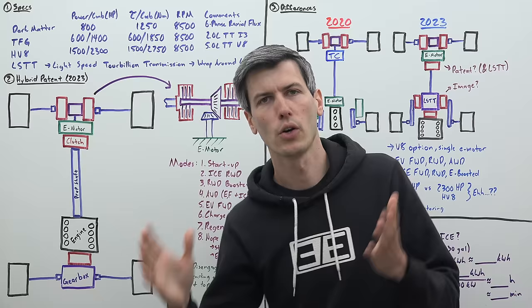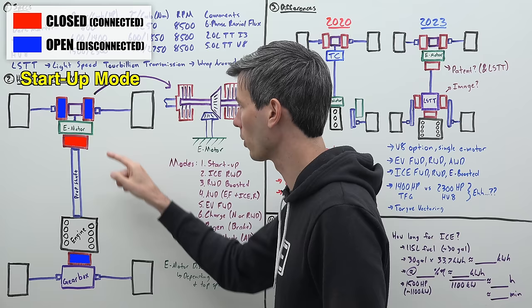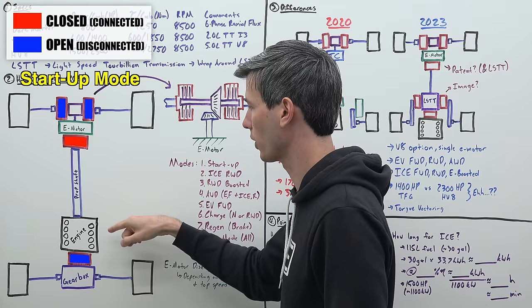The first thing we need to do is start up our engine. So we're going to have these front clutches open, this rear clutch open, we're going to engage this clutch connecting the electric motor to the engine and then use that electric motor to spin up the engine and get it started.